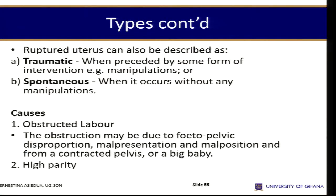Ruptured uterus can be described as traumatic when preceded by some form of intervention — such as internal podalic version where manipulation inside the uterus causes rupture. It can also be spontaneous, where the uterus ruptures without any manipulation.